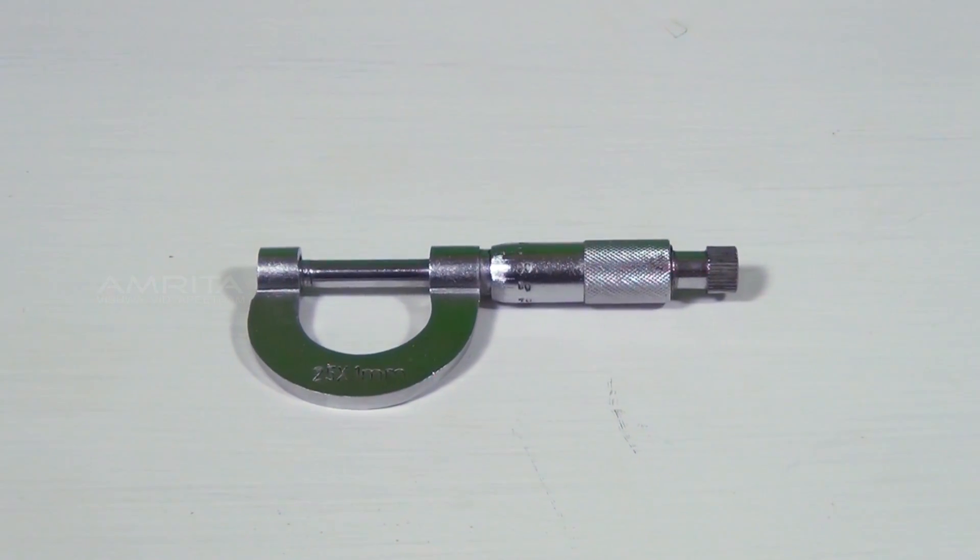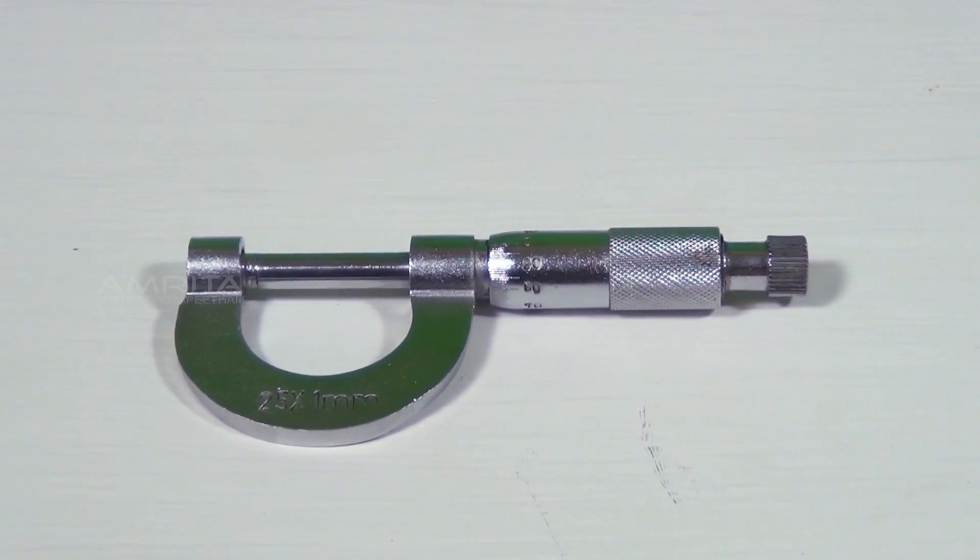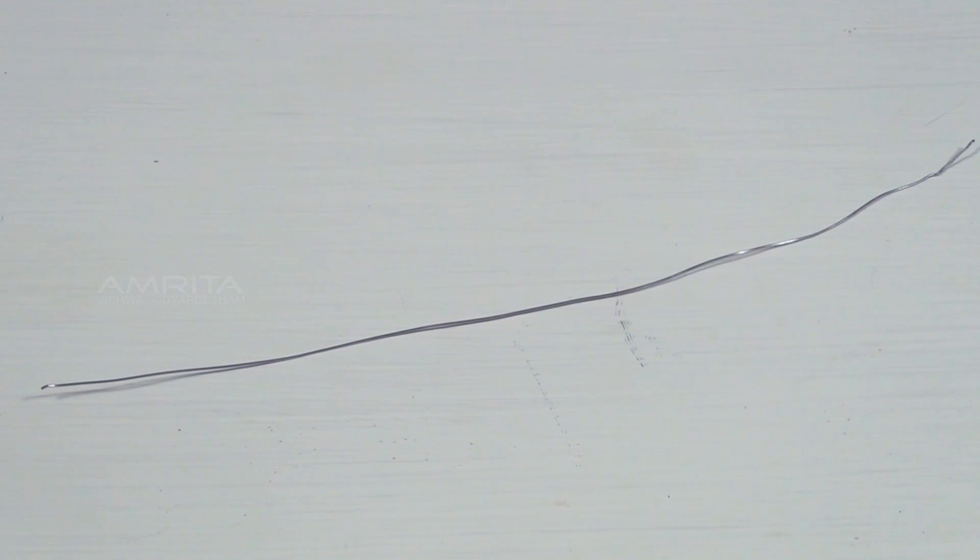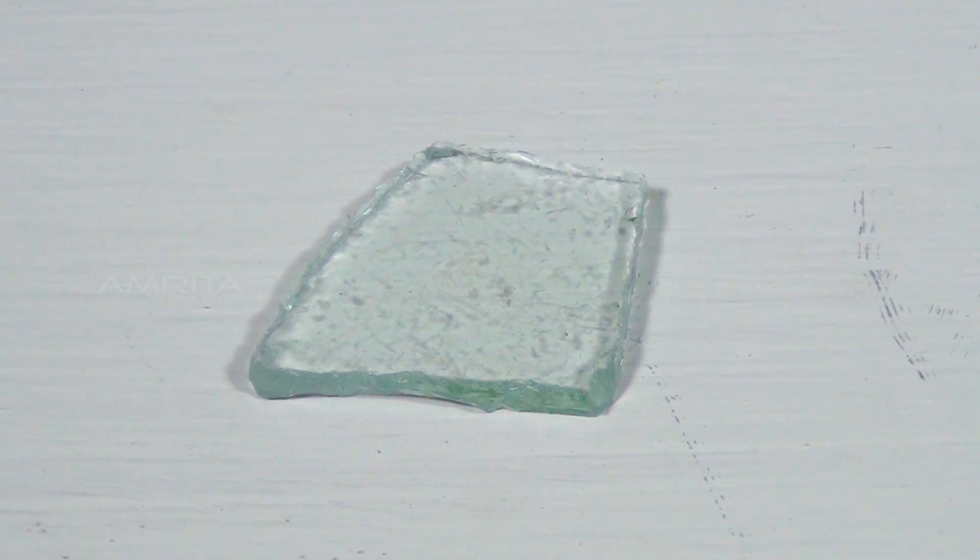Now let's find out how we can use this instrument to find the volume of wire and an irregular laminar along with the thickness of a glass plate and a sheet of paper.